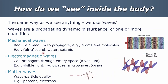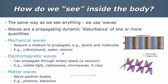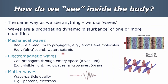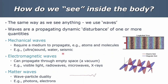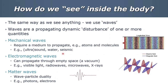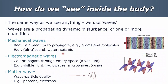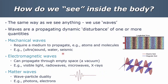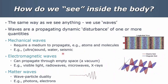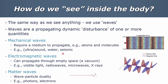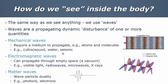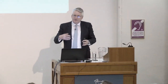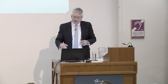Then of course we have electromagnetic waves. These can propagate through empty space or a vacuum. So we have visible light, radio waves at one end of the spectrum, microwaves, and then at the other end x-rays and gamma rays. Really we are going to use the range of that spectrum to produce our medical images.